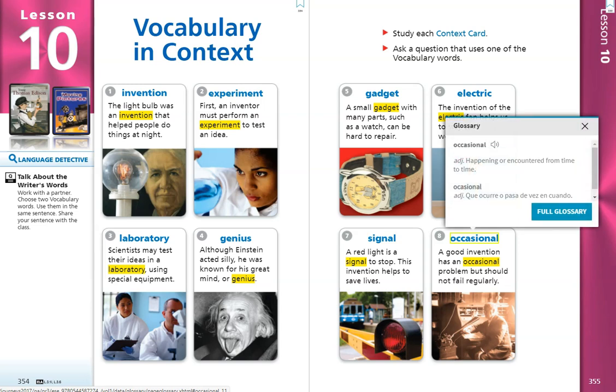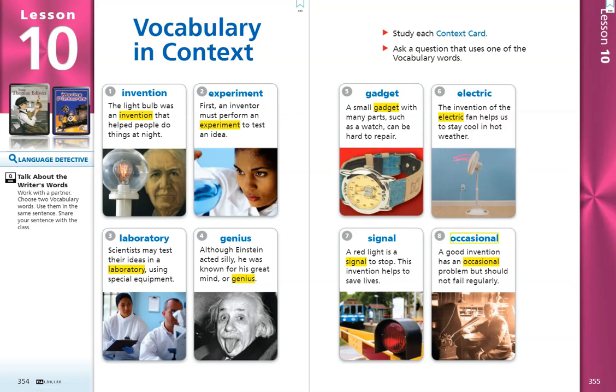The word occasional is an adjective, which is a describing word, and it means happening or encountered from time to time. So it's something that happens every once in a while, but not all the time.